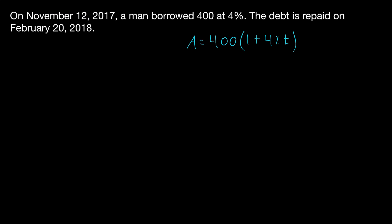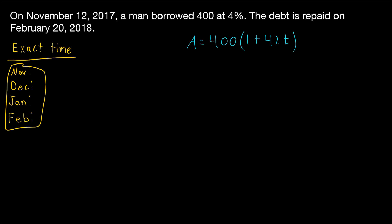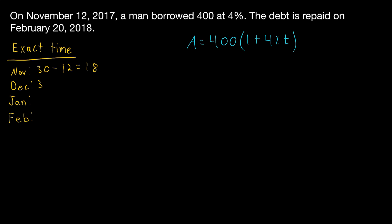Since simple interest is most often annual, we assume this is 4% annual simple interest. All we need to do is calculate T using exact time — breaking the period into months. November has 30 days total; we're not counting November 12th, so 30 minus 12 gives us 18 days in November. Then December and January both have 31 days. We've got 20 days in February until the end of the borrowing period. In total, that's 100 days.